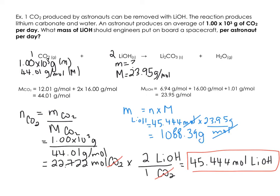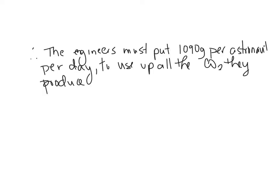So 1,088.39 grams. That's how much lithium hydroxide per day. Let's round that off. We can only have three significant digits, so 1,090 grams of lithium hydroxide per day. There's your final answer. For each astronaut each day, we will need just over a kilogram of lithium hydroxide. The engineers must put 1,090 grams per day to use up all the CO2 they produce.